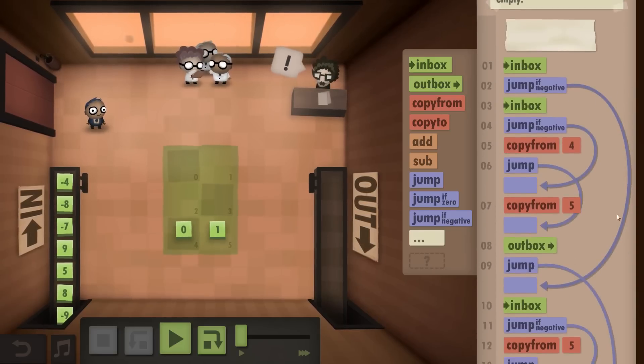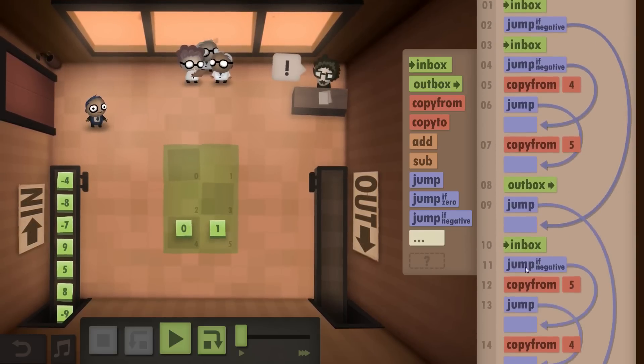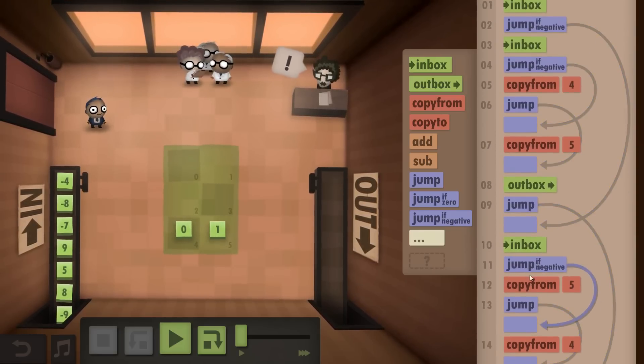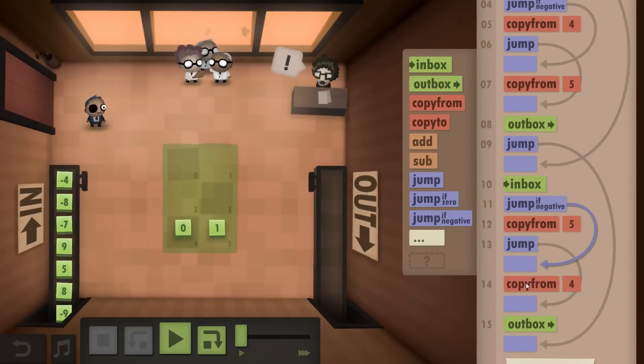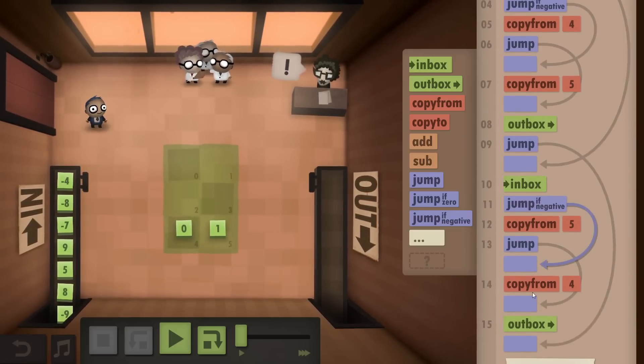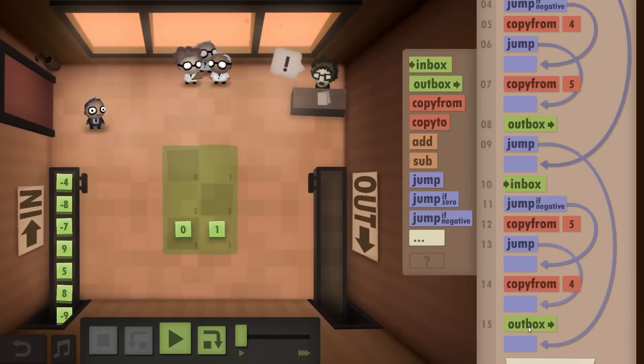So Inbox, jump if negative. Inbox again. Check again if it's negative. And then make the decision if it's a 0 or a 1. Well, actually, it's the other way around. A 1 or a 0. And then eventually Outbox.